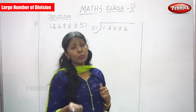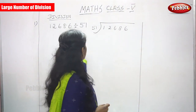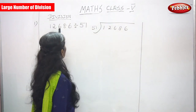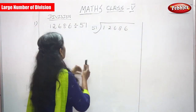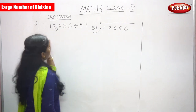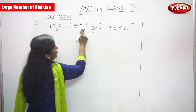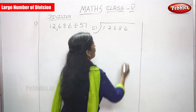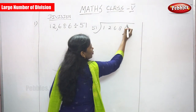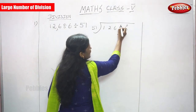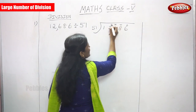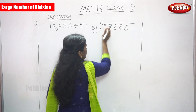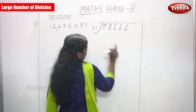Now let's move on to large number division. The first question is 12,686 divided by 51. First you have to write the place value: ones, tens, hundreds, thousands, then ten-thousands (TTH). That is 12,686 divided by 51.